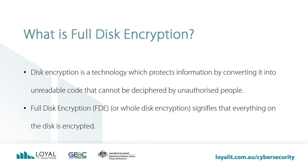What is full disk encryption? Disk encryption is a technology which protects information by converting it into unreadable code that cannot be deciphered by unauthorized people. Full disk encryption, or whole disk encryption, signifies that everything on the disk is encrypted. This means that anything written on the storage in the computer is encrypted. So if the device fell into the wrong hands and that person tried accessing the data on the drive, it would be impossible without the password to the device or knowing the key to unlock the data. We'll have a look at the key mathematics shortly.